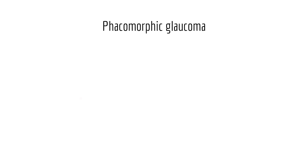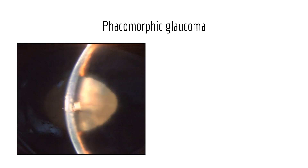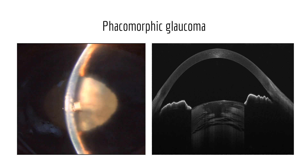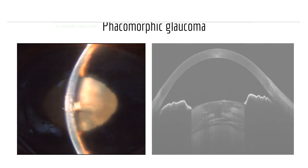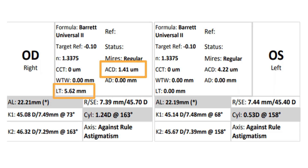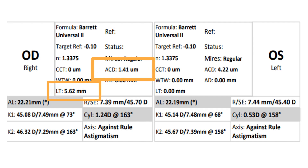Disorders involving the position and size of the lens can also result in pupillary block and secondary angle closure glaucoma. This is a case of phacomorphic glaucoma. ASOCT shows a fluid-filled cleft in the cataractous lens, indicating high intralenticular pressure. IOL Master also shows a very shallow AC depth and increased lens thickness.